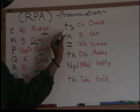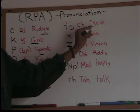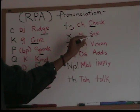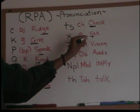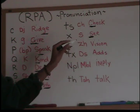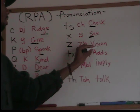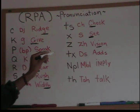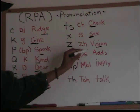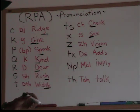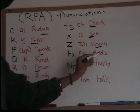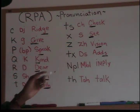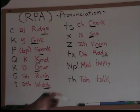TS is a CH sound, as in 'check.' X makes an SE sound. Z makes a ZH sound, as in 'vision.' My brain briefly switched to Chinese there — in Chinese ZH is a different sound, but in Hmong Z gives a ZH sound like the middle of 'vision.' TX also represents a ZH sound, as in 'adds.' For those who study Chinese, Hmong TX is similar to the Chinese Z sound.